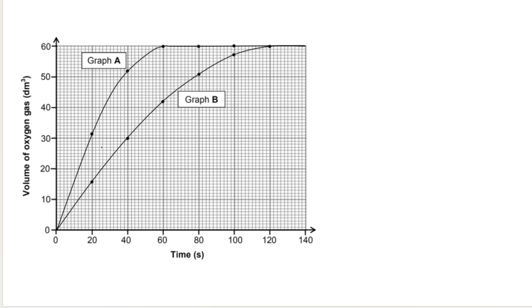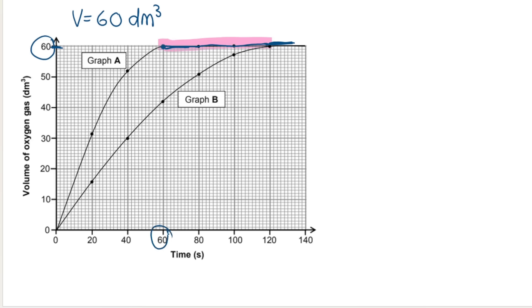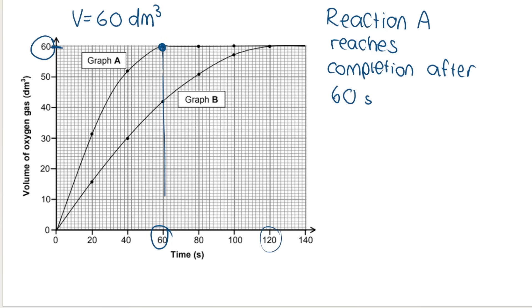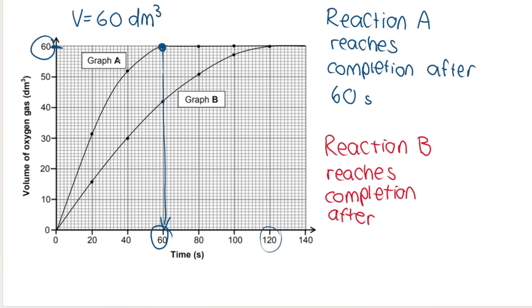This graph makes it easier to see. Graph A and graph B produce the same final volume of oxygen — 60 cubic decimeters — in both cases. But graph A has a steeper gradient and the graph starts to level out much earlier. The volume of gas becomes constant at 60 seconds for graph A versus 120 seconds for graph B. Reaction A reaches completion after 60 seconds, and reaction B reaches completion only after 120 seconds.